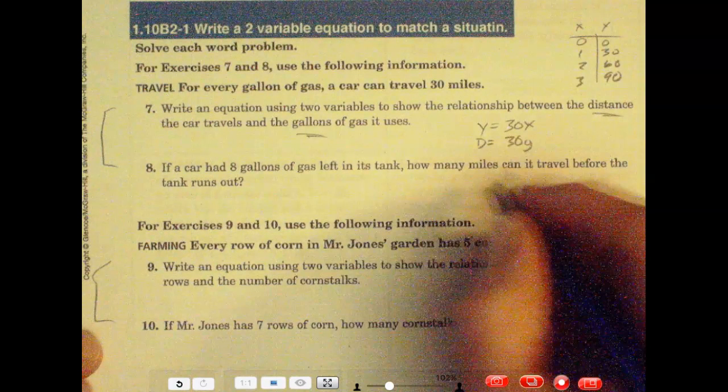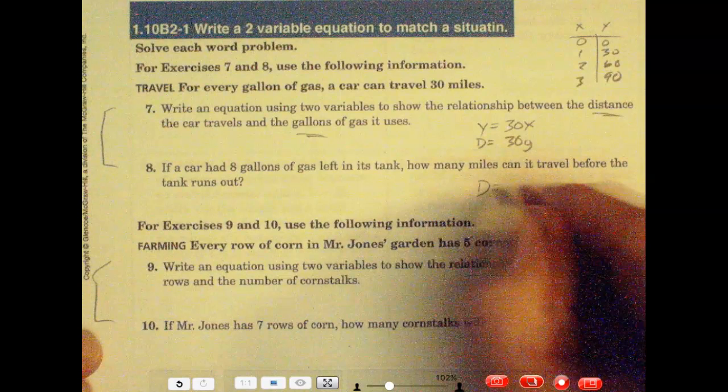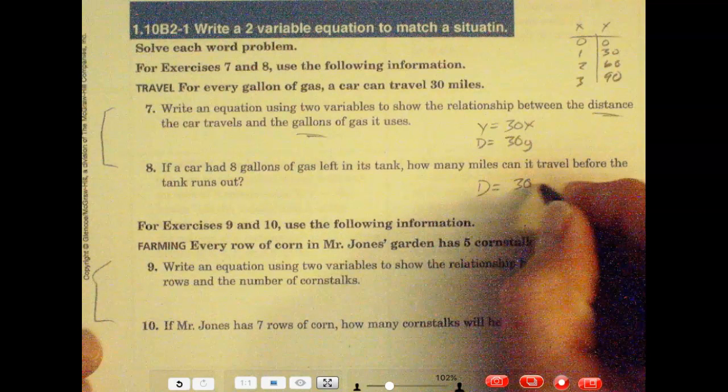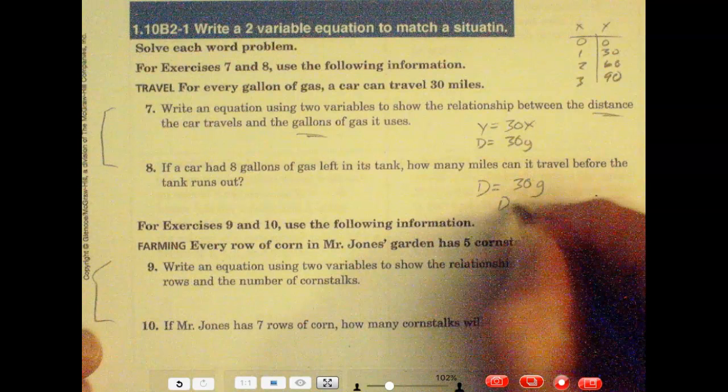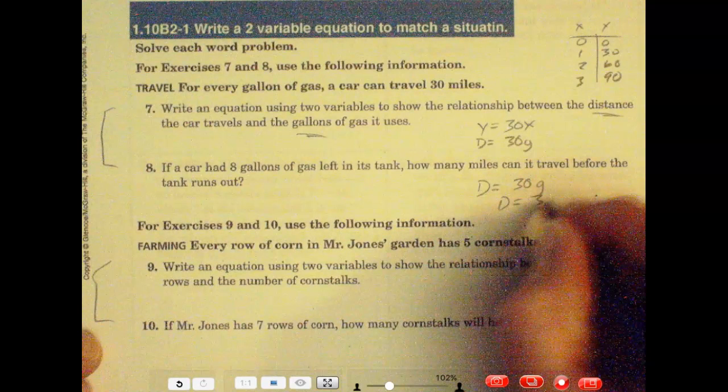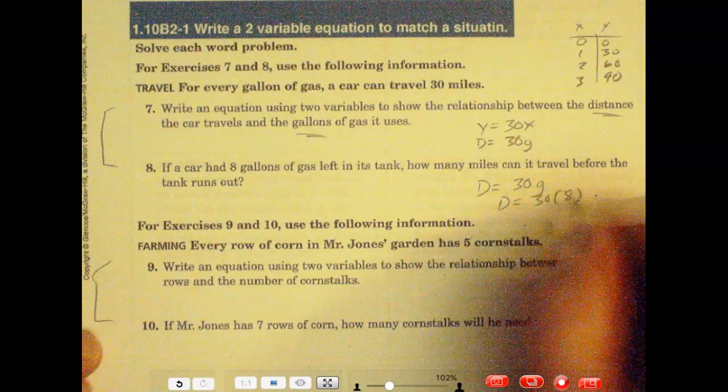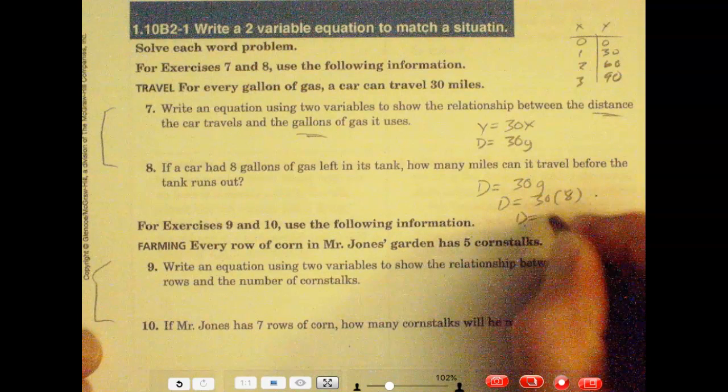Well, again, the distance is going to be equal to 30 times the g. So we can substitute in eight for the gallon. So the distance is equal to 30 times the eight. Looks like that distance is going to be equal to 240 miles.